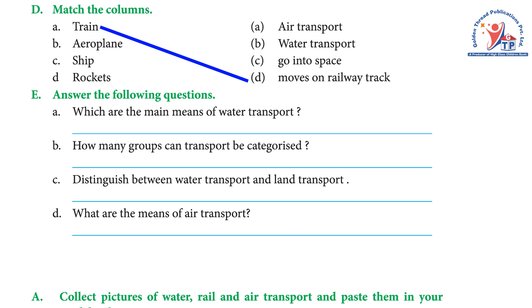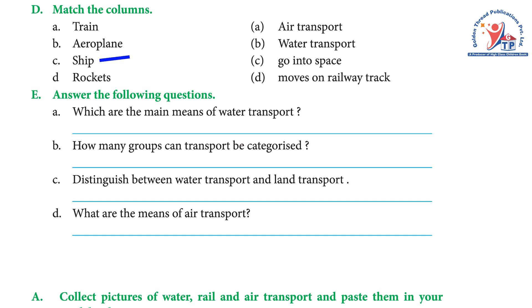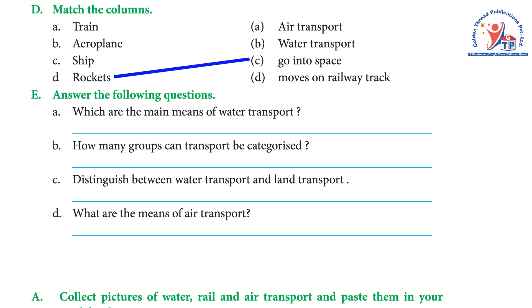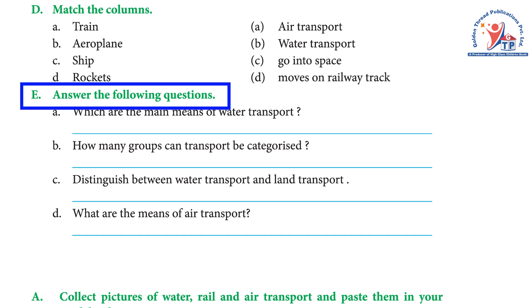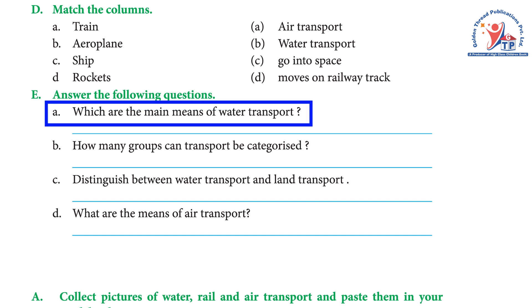Exercise D: Match the columns. A) Train — moves on railway track. B) Aeroplane — air transport. C) Ship — water transport. D) Rocket — goes into space.